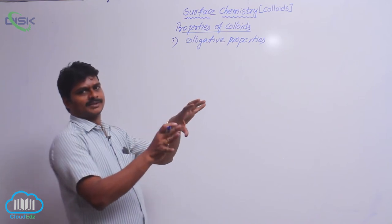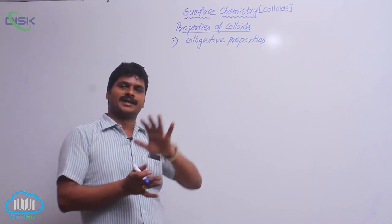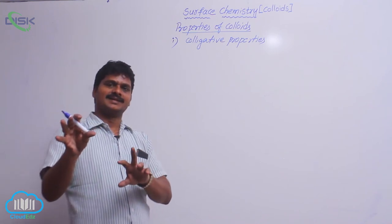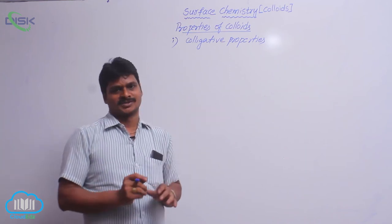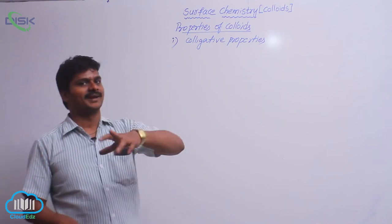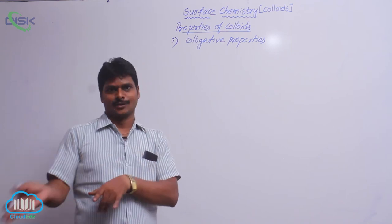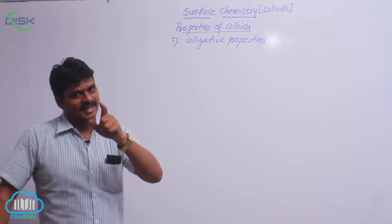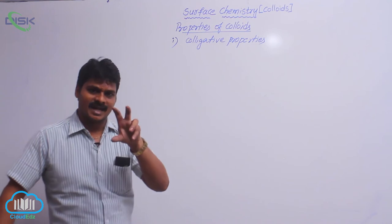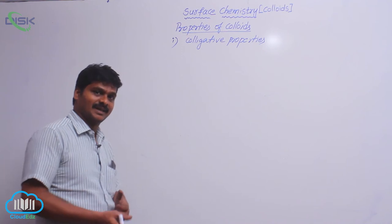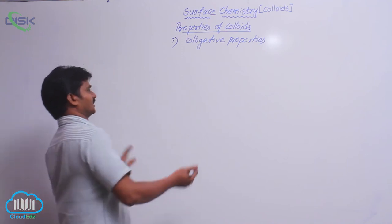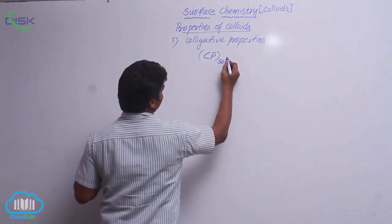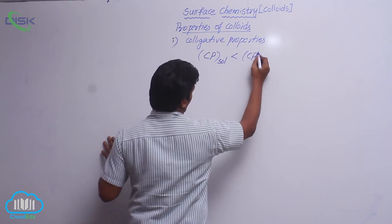In a true solution, suppose there are 1000 particles. In a colloidal solution, each 100 particles form one colloidal range particle. So each colloidal particle is an association of 100 solute particles from the true solution. That means in the colloidal solution, there will be only 10 colloidal particles (10 × 100 = 1000). So in a true solution there are 1000 individual particles, whereas in a colloidal solution there are only 10 aggregates, each containing 100 molecules. That is why colligative property of a colloidal solution (sol) is lesser than the colligative property of a true solution.